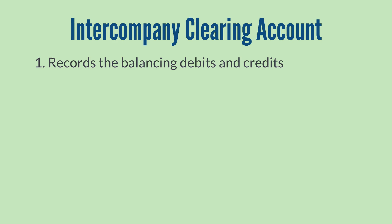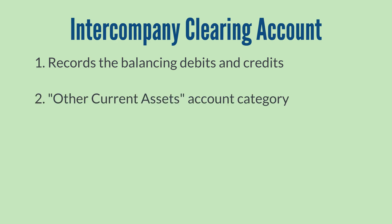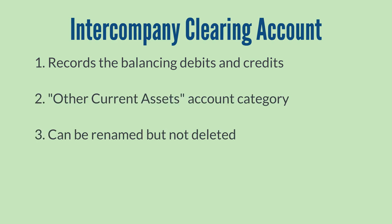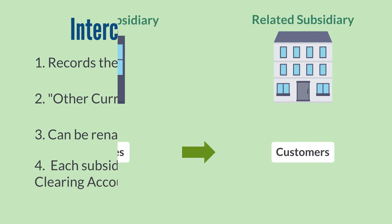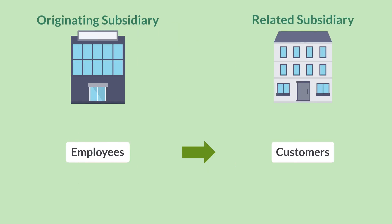The Intercompany Clearing Account falls into the Other Current Assets account category. You can rename this account, but you can't delete it or create another account to take its place. Each of your subsidiaries will have an Intercompany Clearing Account, and any Intercompany Adjustments will always be recorded on the Intercompany Clearing Account for the originating subsidiary in that subsidiary's currency.